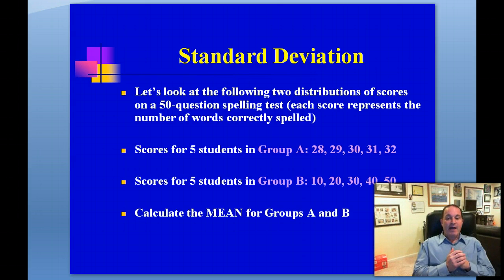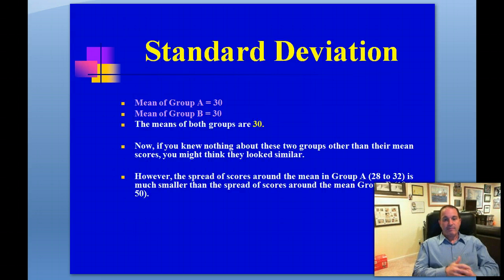I ask you to calculate the mean for Group A and Group B. So take a second and put this lecture on pause and calculate the mean for Group A and the mean for Group B. When you calculate the mean for Group A, you find that the mean is 30. And if you calculate the mean for Group B, you also find that the mean is 30. So both groups have means of 30.